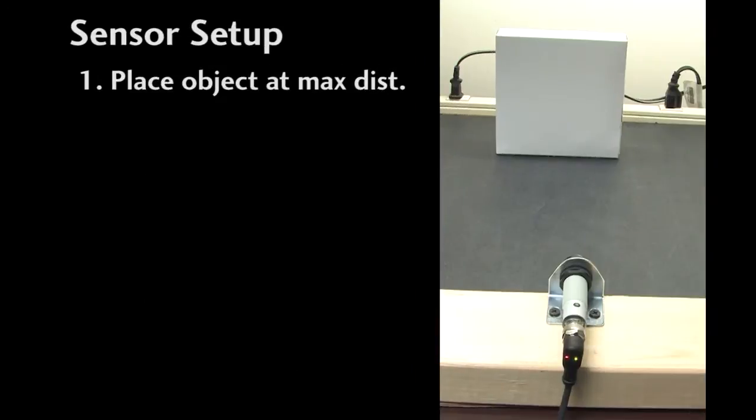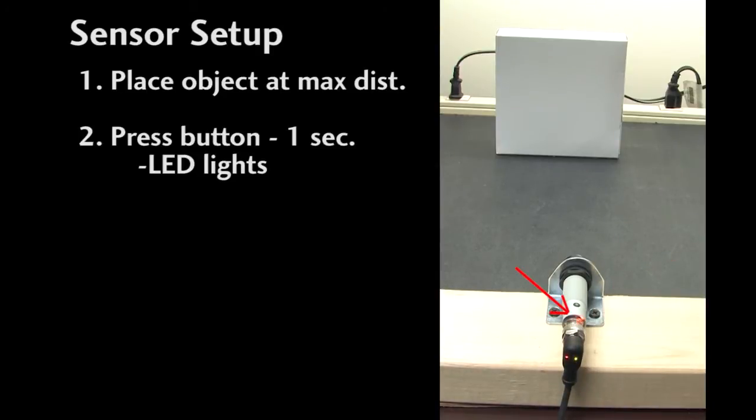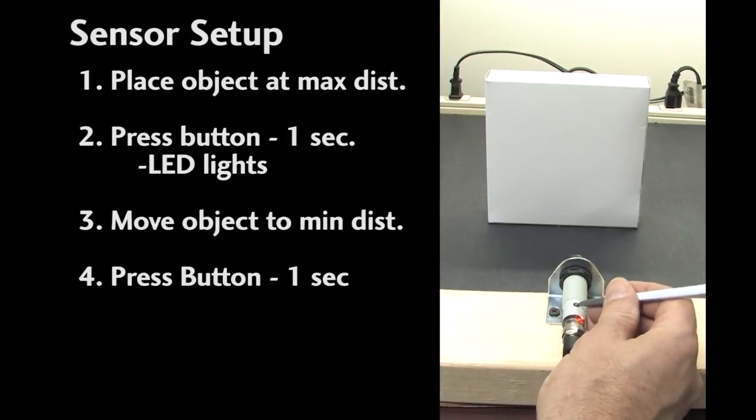Let's try it. First, place an object at the max distance you want to cover and then hold the button down for one second. The sensor LED turns on. Now move the object to the nearest distance you want to detect. Press the button for one second.